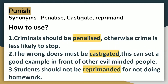The next word is PUNISH. When we write any crime-related essay, we have to write this word. However, this word is so simple that it won't let you score high in IELTS exam. You can add penalize, castigate and reprimand to your vocab list to boost up your score. Criminals should be penalized, otherwise crime is less likely to stop. The wrongdoers must be castigated — this can set a good example in front of other evil-minded people. Students should not be reprimanded for not doing homework.